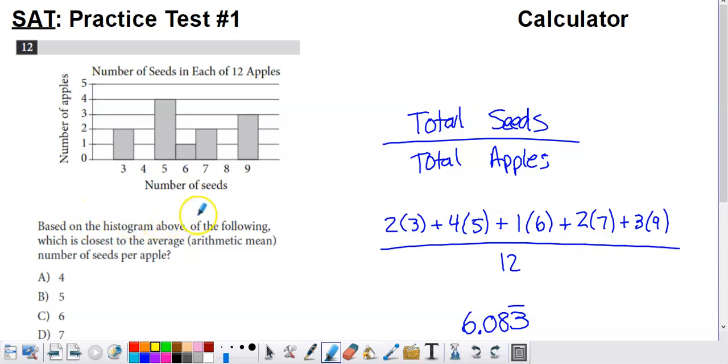In the histogram above, which of the following is closest to the average, which is just the arithmetic mean, right? Add up the total number and divide by how many you had: number of seeds per apple.